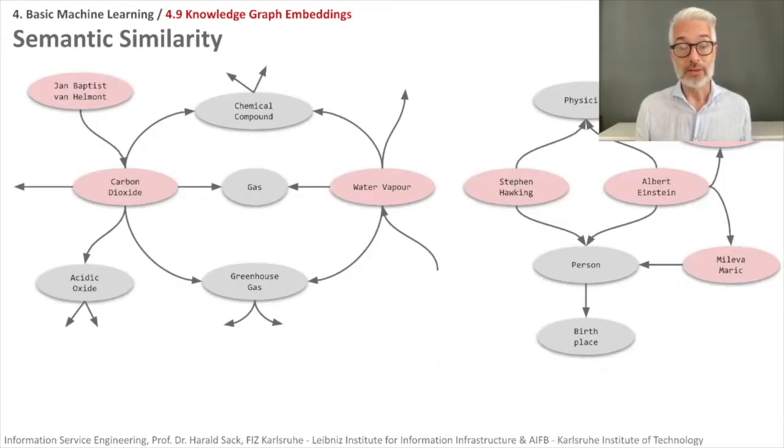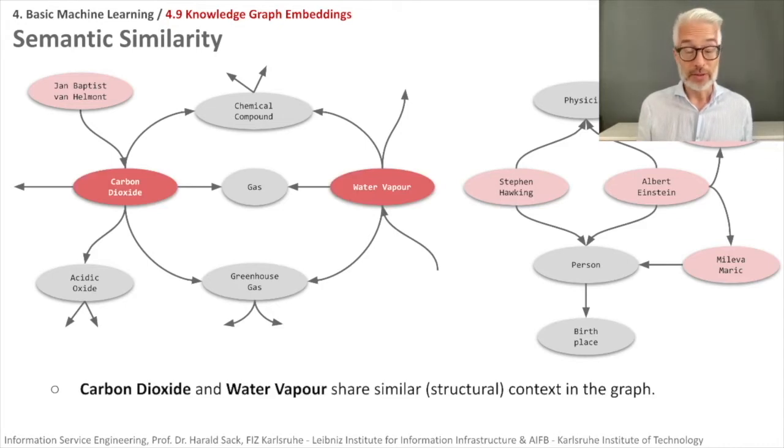There is a way to find this out. Simply look at the graph structure. These are of course imaginary graph structures showing on the one hand side the greenhouse gases like carbon dioxide or water vapor, and on the other side the two physicists Stephen Hawking and Albert Einstein.